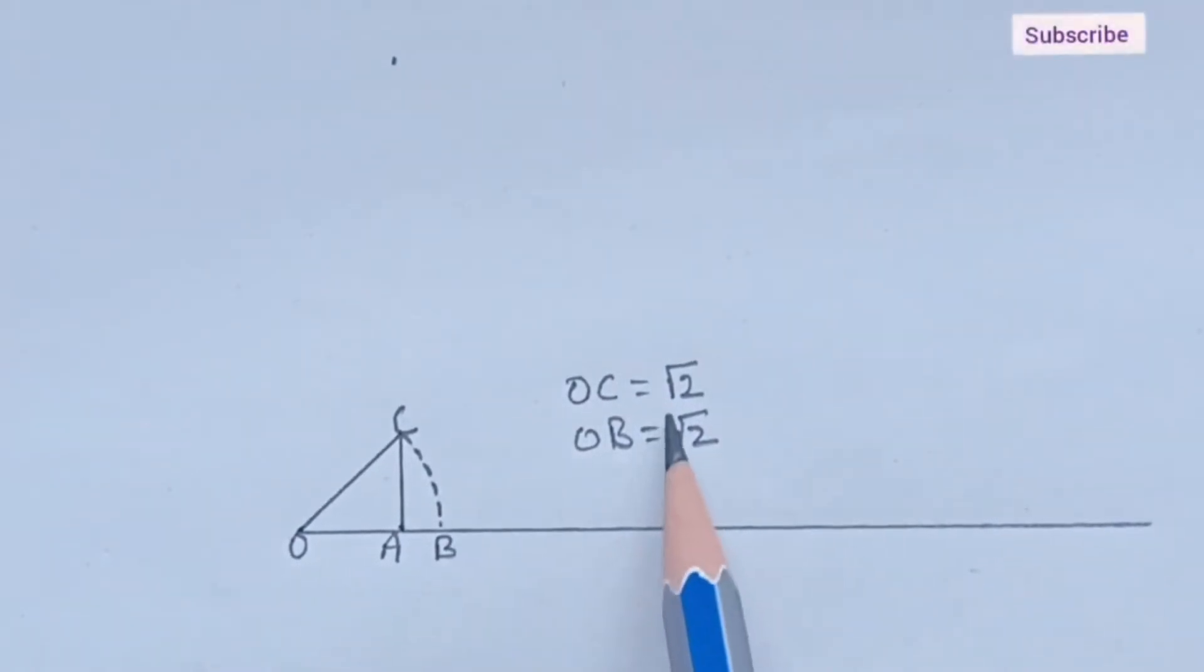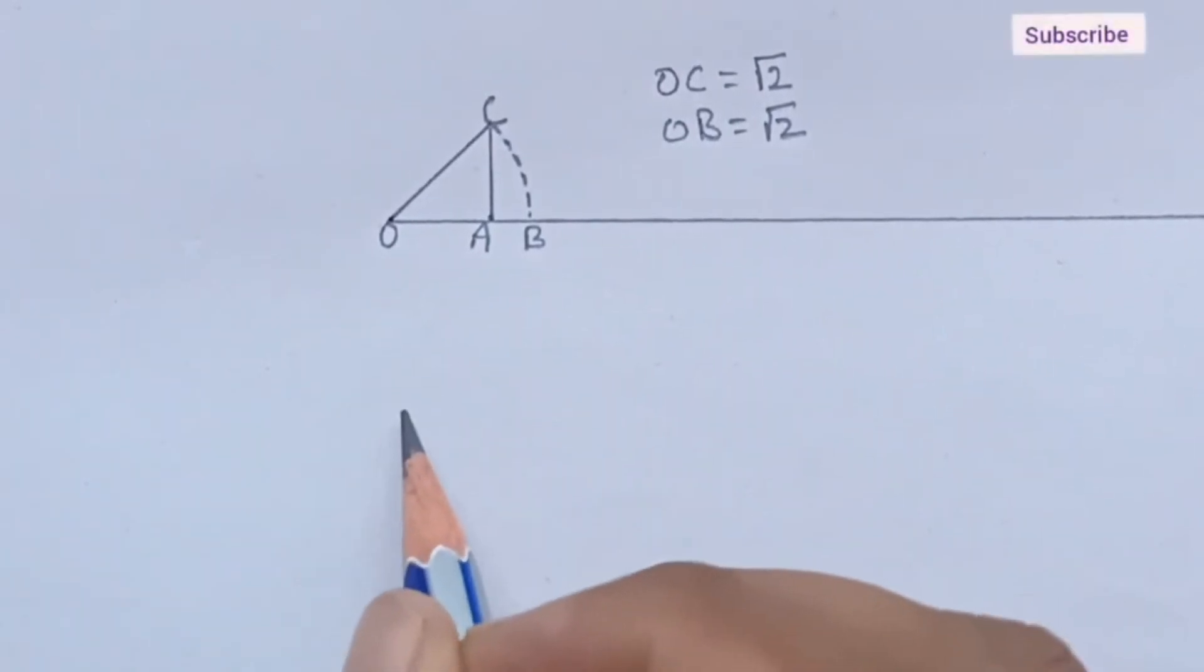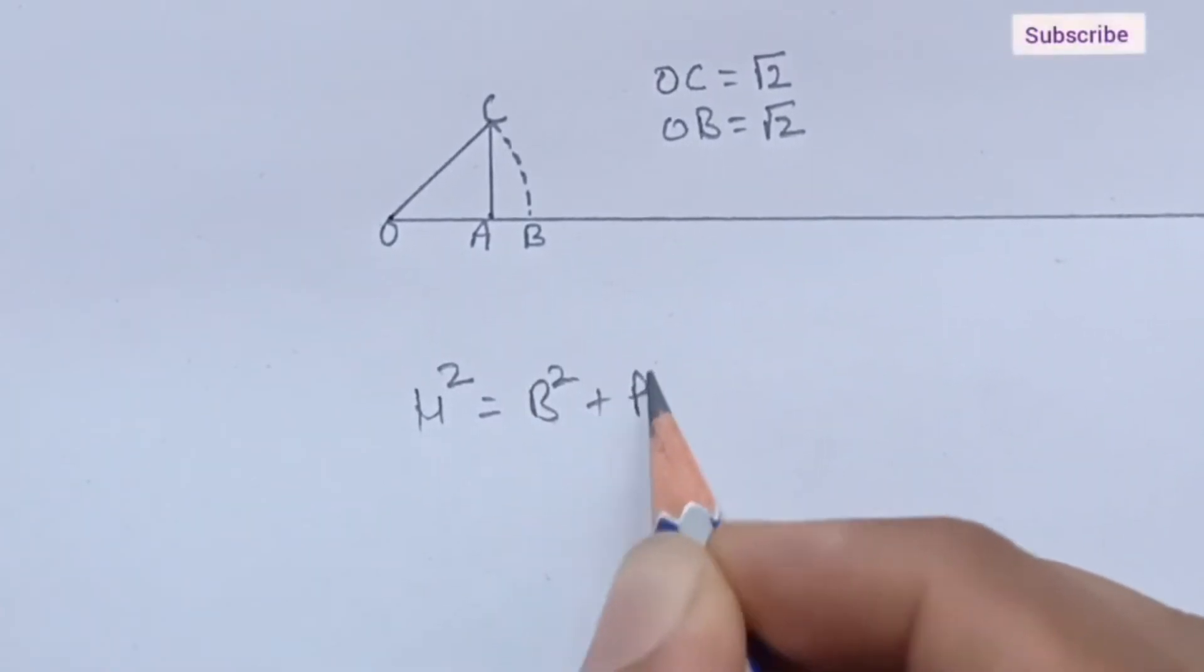This under root 2 comes from the Pythagoras theorem. So, Pythagoras theorem is, hypotenuse square is equal to base square plus perpendicular square.